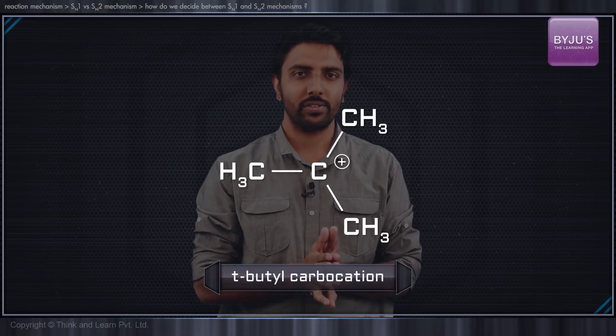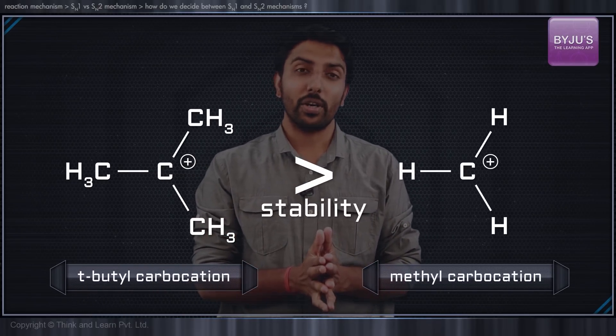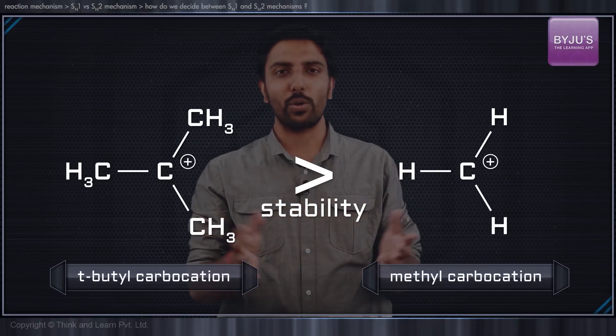Interestingly, the structural factors which make carbocations unstable are also the factors which lead to faster SN2 reactions. For example, take tertiary butyl carbocation, which is definitely much more stable than the methyl carbocation because of the inductive as well as the hyperconjugation effects.